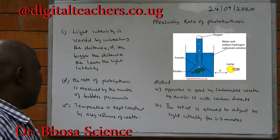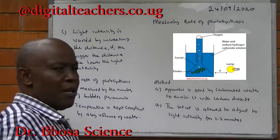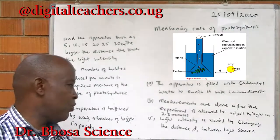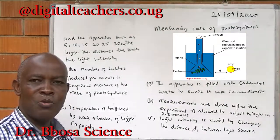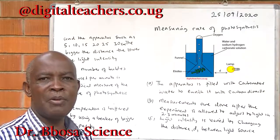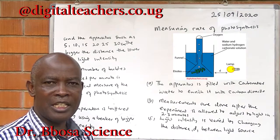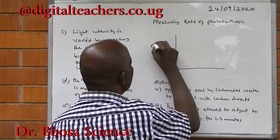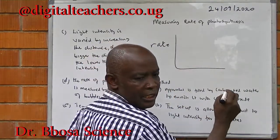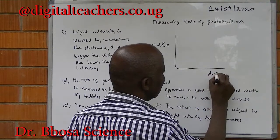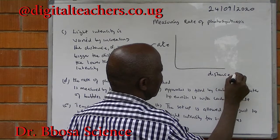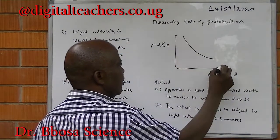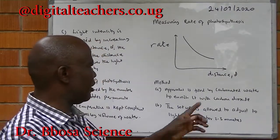The rate of photosynthesis is measured by the number of bubbles per minute. Temperature is buffered by the capacity of the beaker. We have to keep temperature constant because temperature is also a factor which affects the rate of photosynthesis. If you plot a graph of rate against distance, the graph looks like that — because as the distance increases, the light intensity decreases.